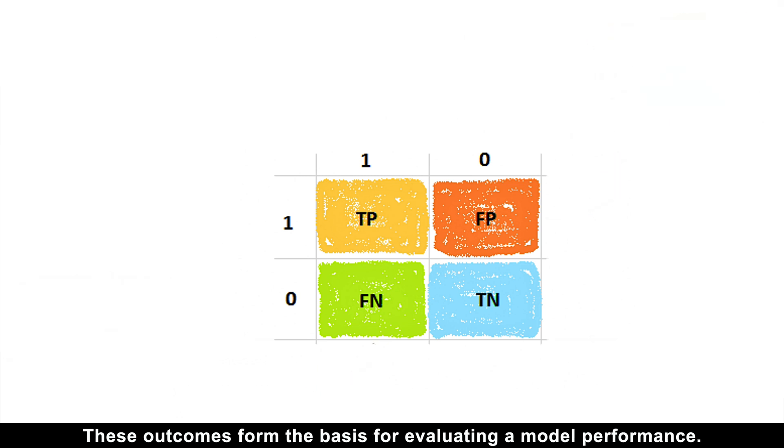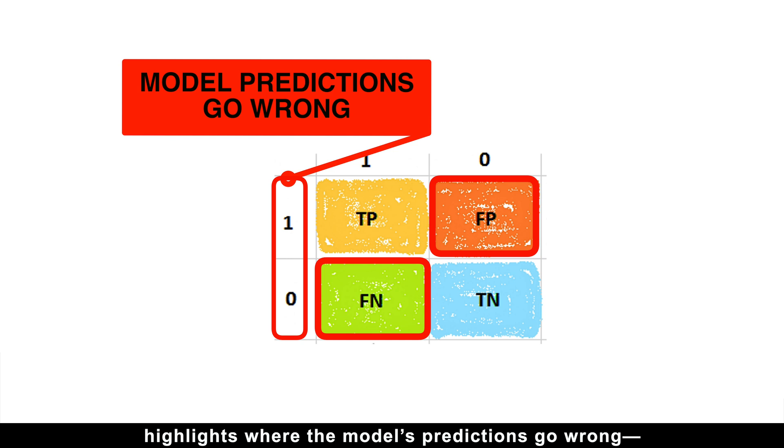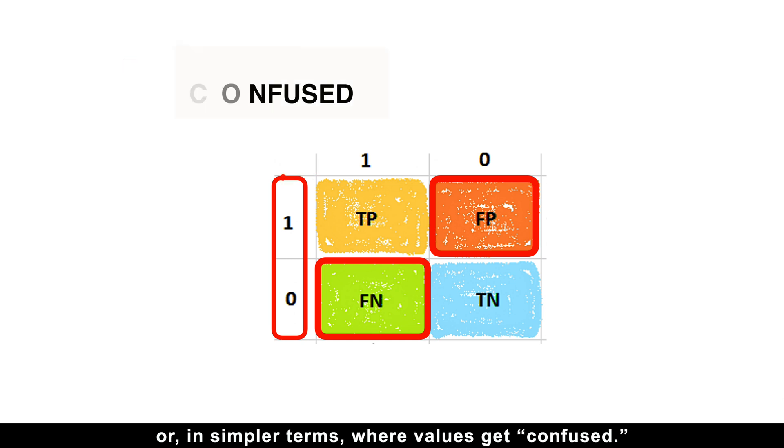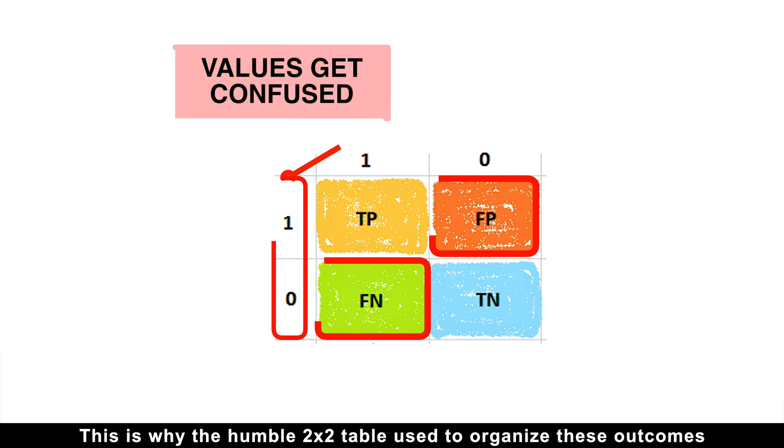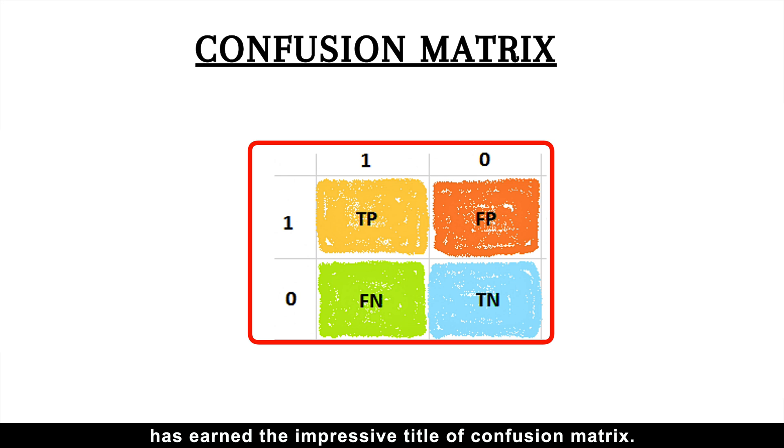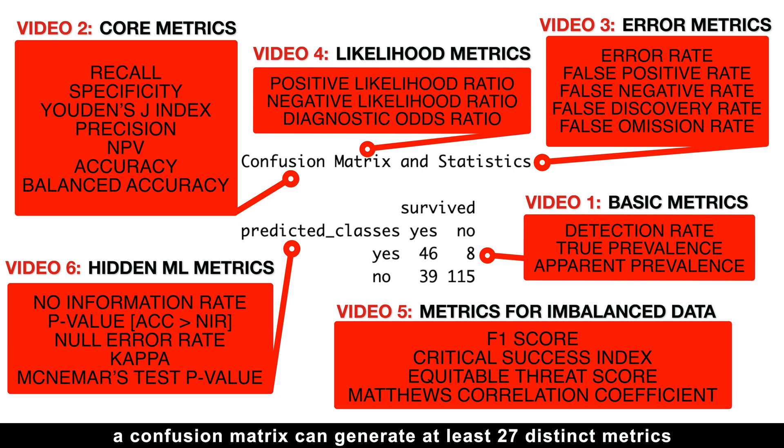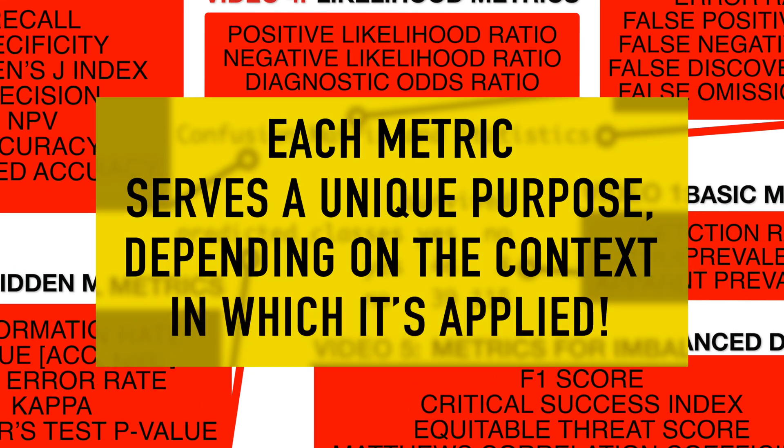These outcomes form the basis for evaluating a model's performance. The presence of false positives and false negatives highlights where the model's predictions go wrong, or in simpler terms, where values get confused. This is why the humble 2x2 table used to organize these outcomes has earned the impressive title of confusion matrix. What is truly remarkable is that despite containing just four numbers, a confusion matrix can generate at least 27 distinct metrics that measure predictive power. Each metric serves a unique purpose depending on the context in which it's applied.